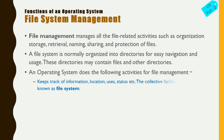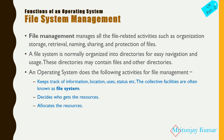An operating system does the following activities for file management: Number one, it keeps track of information, location, uses, and status — the collective facilities are often known as the file system. It decides who gets the resources and allocates memory accordingly. It also de-allocates resources when we delete a file, and allocates resources when we create a file.